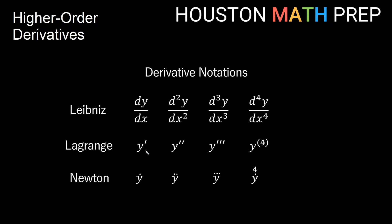For the Lagrange prime notation, which is shorter to write but doesn't specify what we're taking the derivative with respect to — so it's easier to write quickly but less descriptive. Our first derivative is y prime, second derivative is y double prime, third derivative is y triple prime with three marks. After the third derivative, we stop writing prime marks and simply write the order in parentheses. If the parentheses are not there, it would symbolize y to the fourth power, not a derivative. But with the 4 in parentheses, we're talking about the fourth derivative of y.